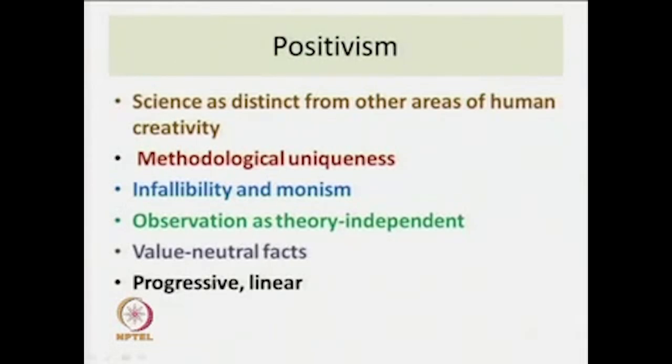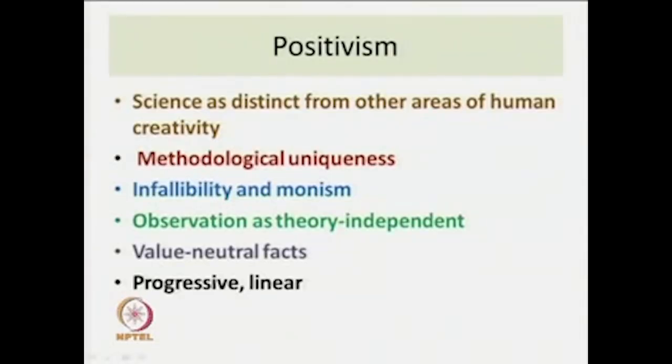There was an infallibility about science, and a notion of monism. Observation was seen as theory-independent — theory would not color empirical observations — and the facts given by scientists were claimed to be value-neutral under a positivist framework. The narrative of science in this framework is therefore one that is progressive and linear, with knowledge growing progressively in an almost linear fashion.